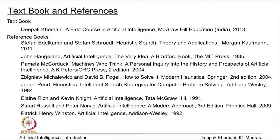There are some textbooks in AI which have been very popular and I was using material from them earlier. These include the Rich and Knight book on AI, Russell and Norvig — which is probably the most well-known textbook at this point — and a book by Winston, written earlier. There are also specialized books: two books by Fogel and Michalewicz on certain aspects we will cover, and a book by Judea Pearl which we will use for game playing.